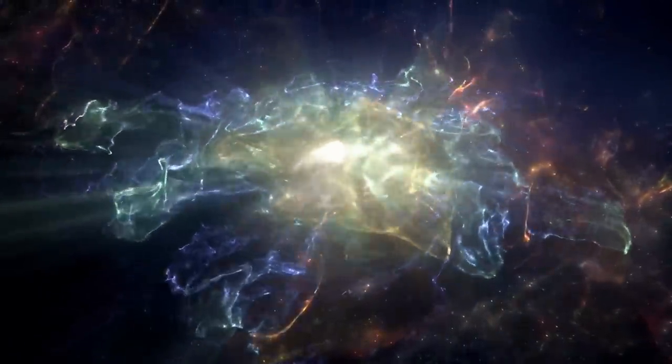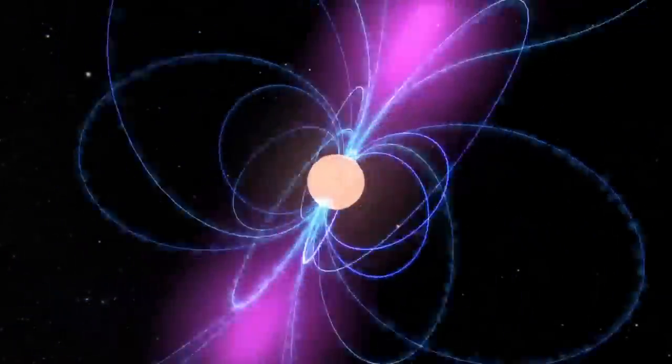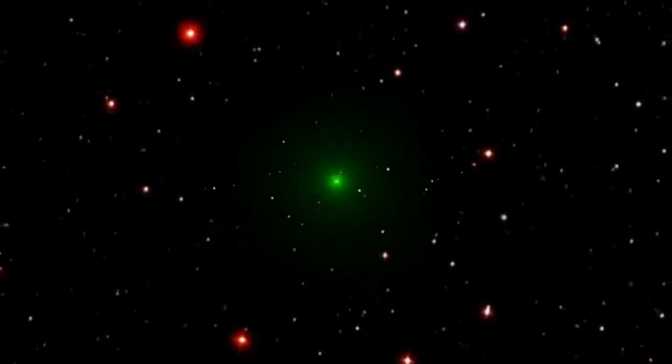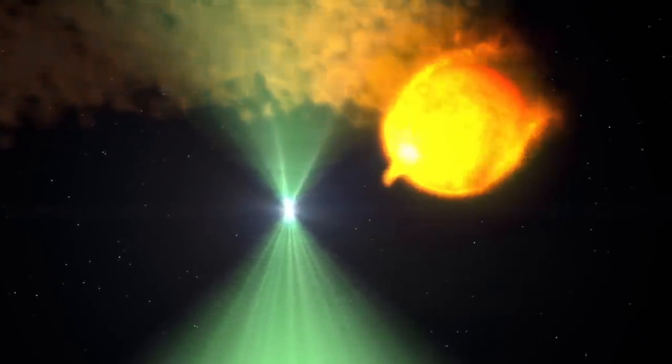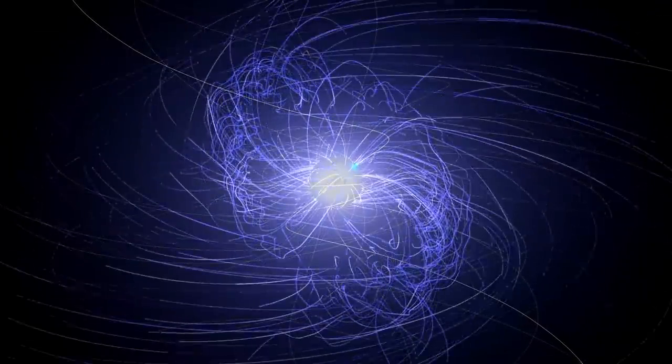The dense remnants of massive stars, pulsars rotate with extreme regularity and astronomers are able to tell exactly when to expect each new pulse. The sea of gravitational waves, however, alters when the pulses arrive on Earth. Taking advantage of this, a precise monitoring of many pulsars across the sky could reveal the presence of the gravitational waves which are otherwise so much harder to detect.